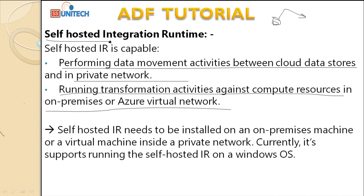You can also run transform activities against compute resources in on-premises or Azure virtual networks using self-hosted IR. Self-hosted IR needs to be installed on an on-premises machine or inside a virtual network. If your data is available on your local system or virtual machine and you want to move that data to the cloud, you install the self-hosted IR directly on that machine.